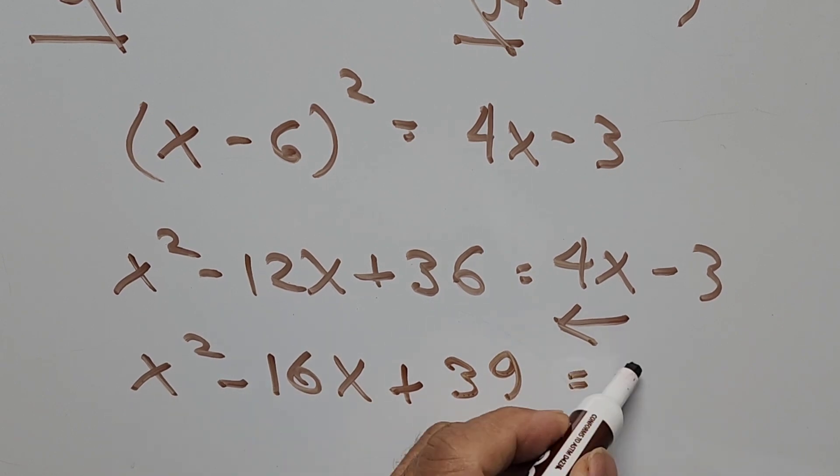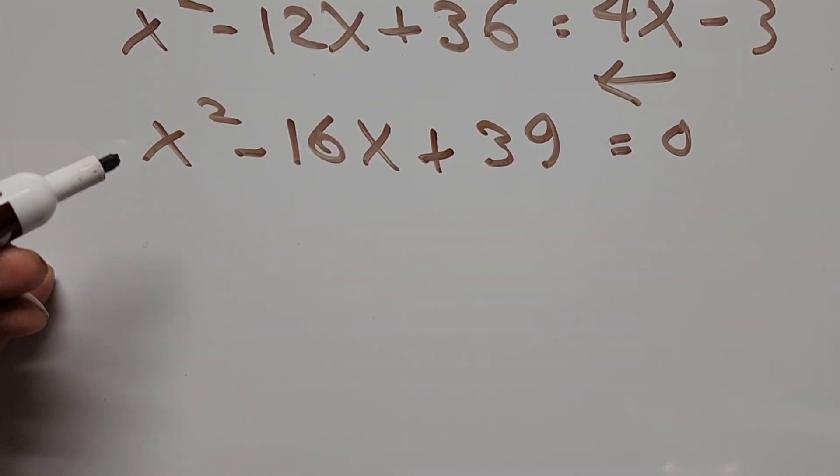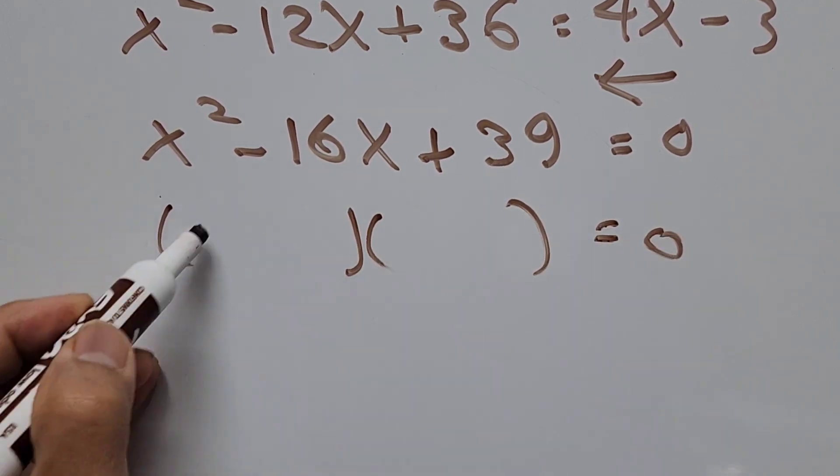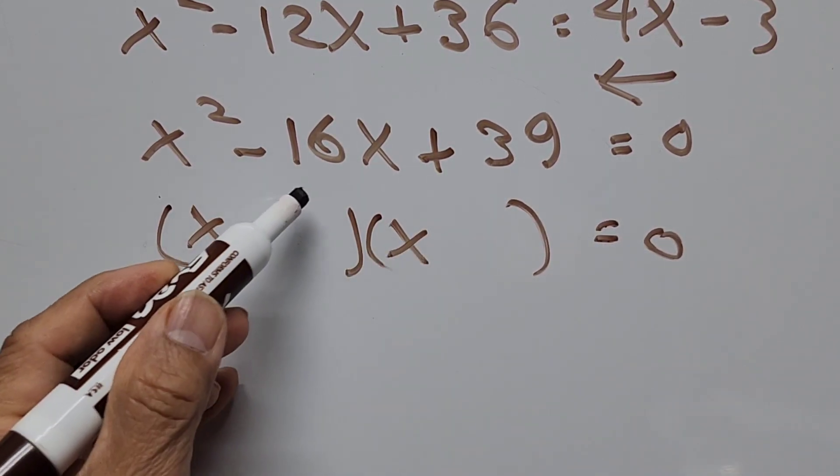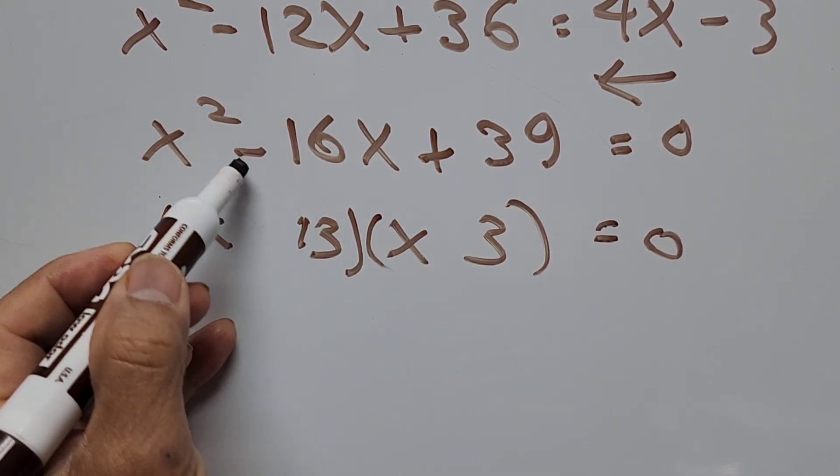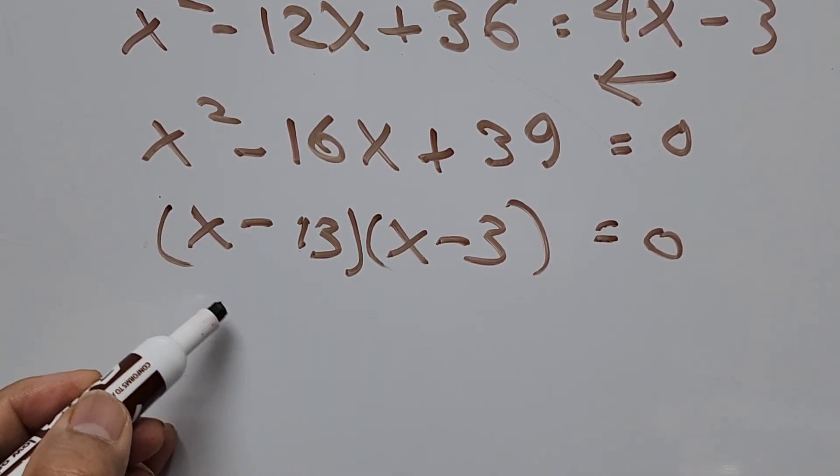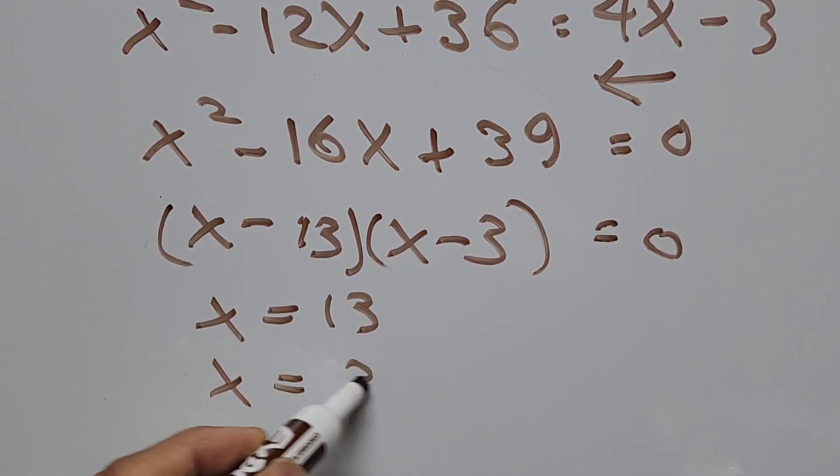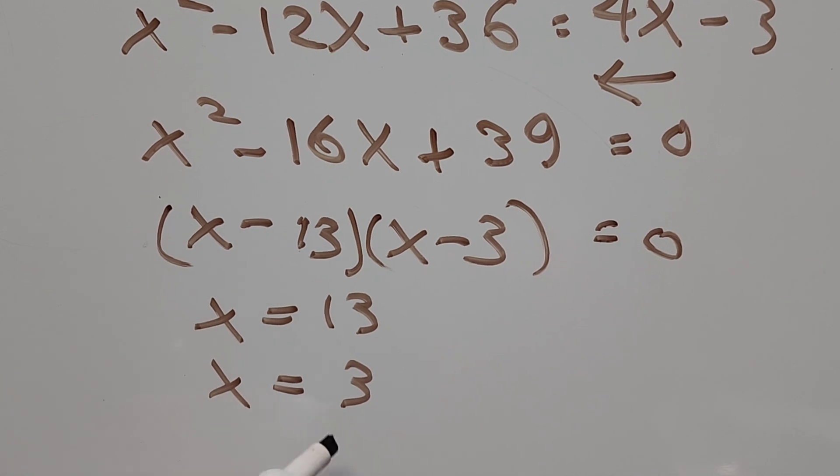Find the value of x by factoring, so we have x and x, and 16 is 13 and 3, these are both negative, so we have x equals 13 and x equals 3.